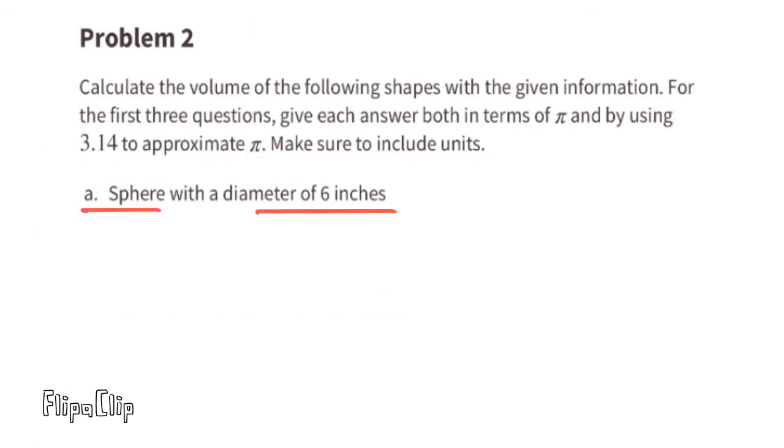Problem number two. Calculate the volume of the following shapes with the given information. For the first three questions, give each answer both in terms of pi and by using 3.14 to approximate pi. Make sure to include units. A. Sphere with a diameter of 6 inches.